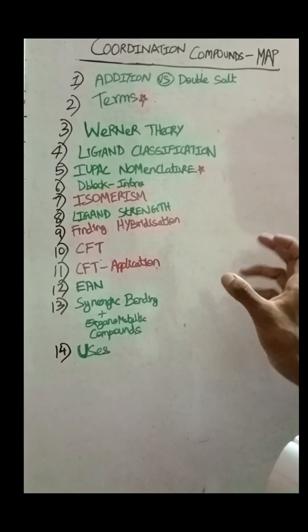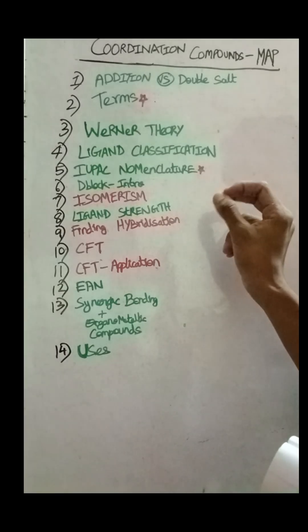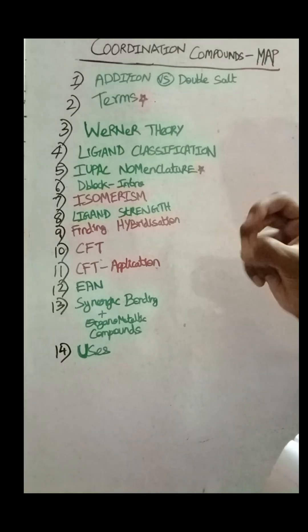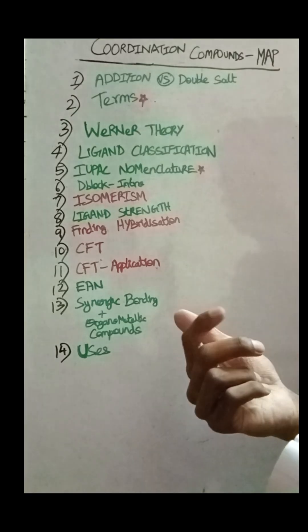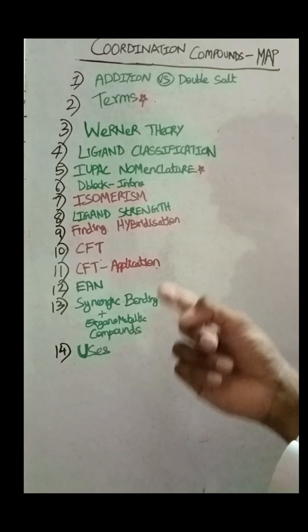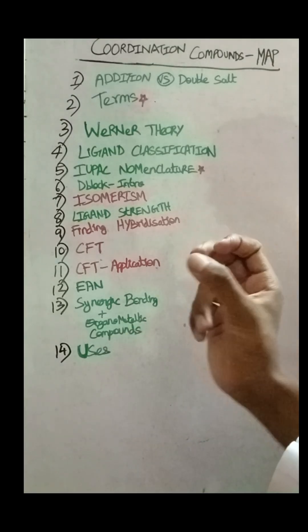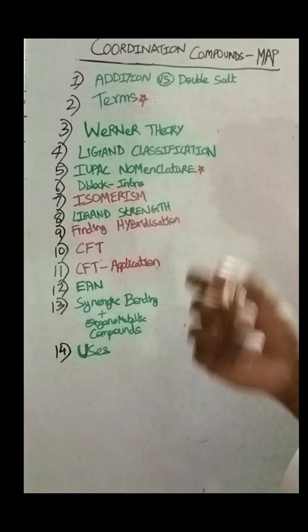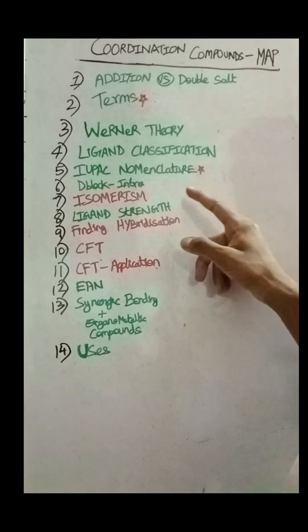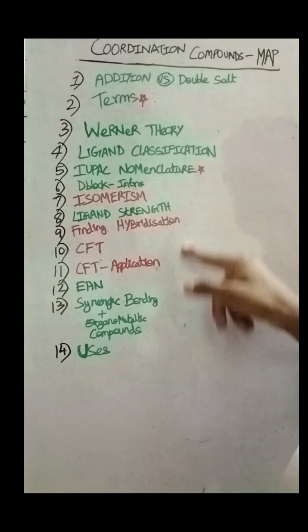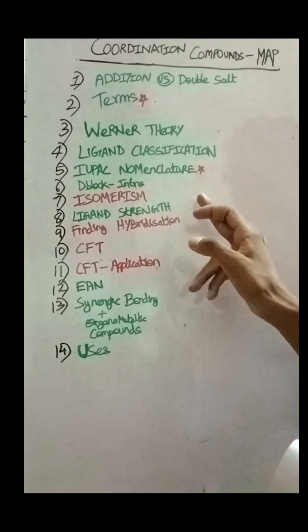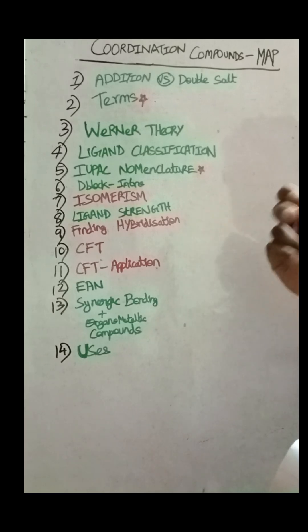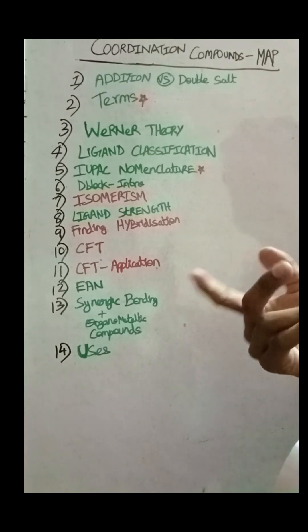Isomerism is the eighth concept. The next one is Ligand Strength. One of the Ligand strengths determines the shape of a coordination compound. So, Ligand Strength goes together with hybridization.